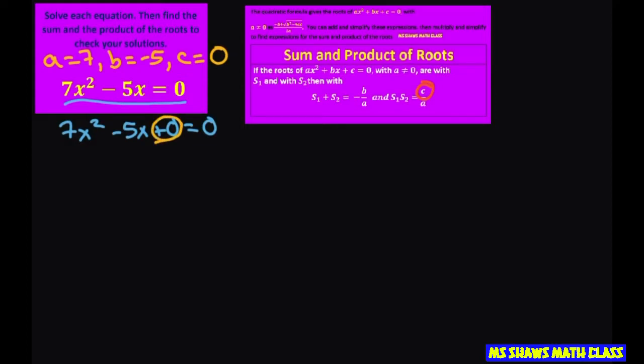So now let's go ahead and factor this. I'm going to take that back out, but factor out an x. You get 7x minus 5 equals 0.